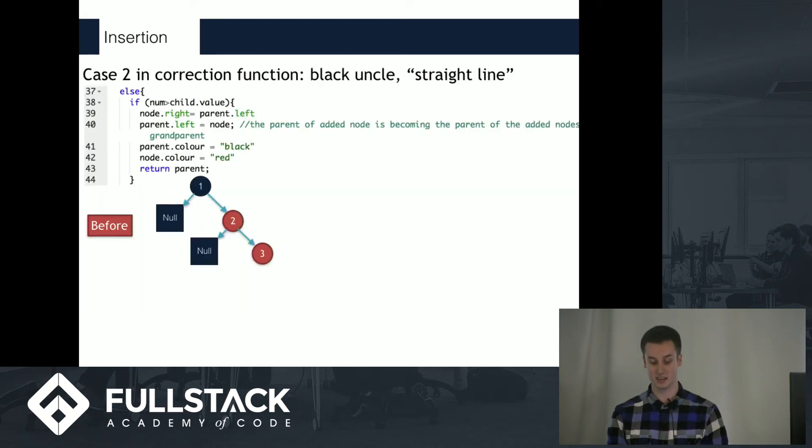The second case, we again have two red nodes in a row. But this time, the uncle is black, and hopefully this helps demonstrate why we insert black null nodes, so that we can assess the color of the uncle.